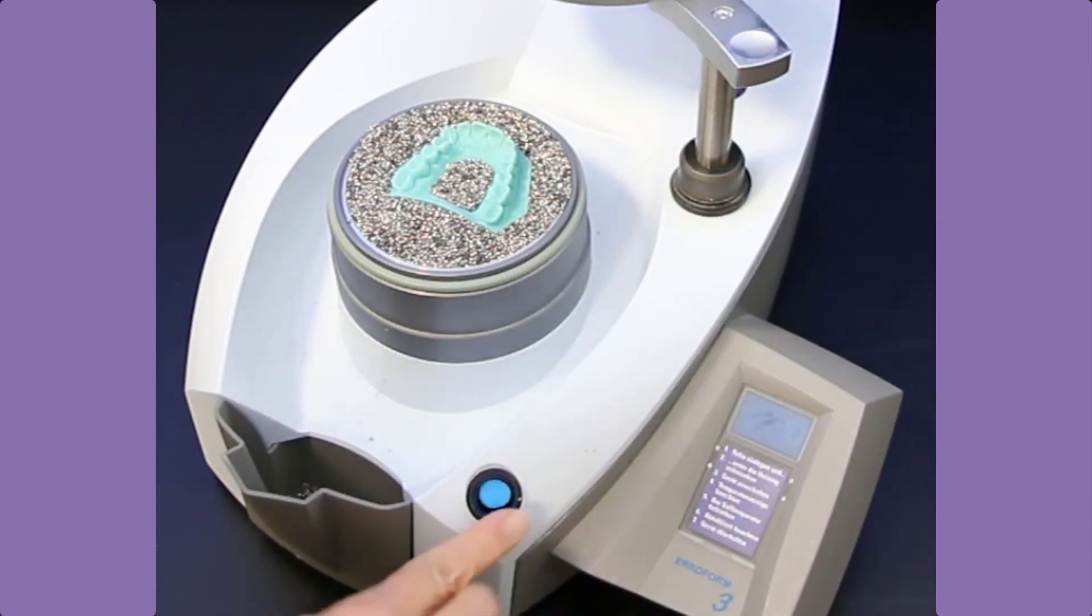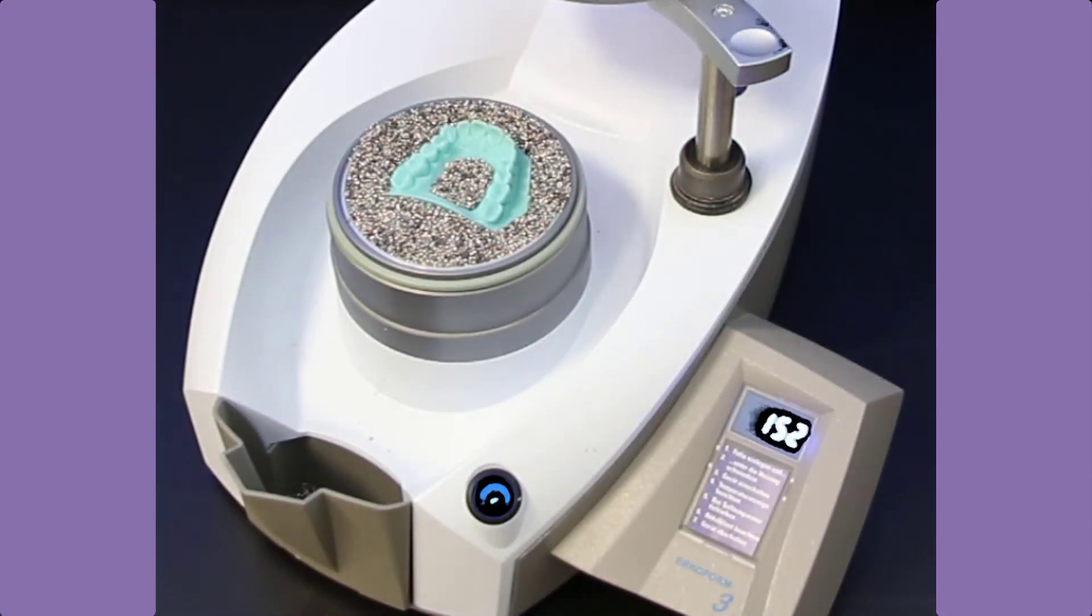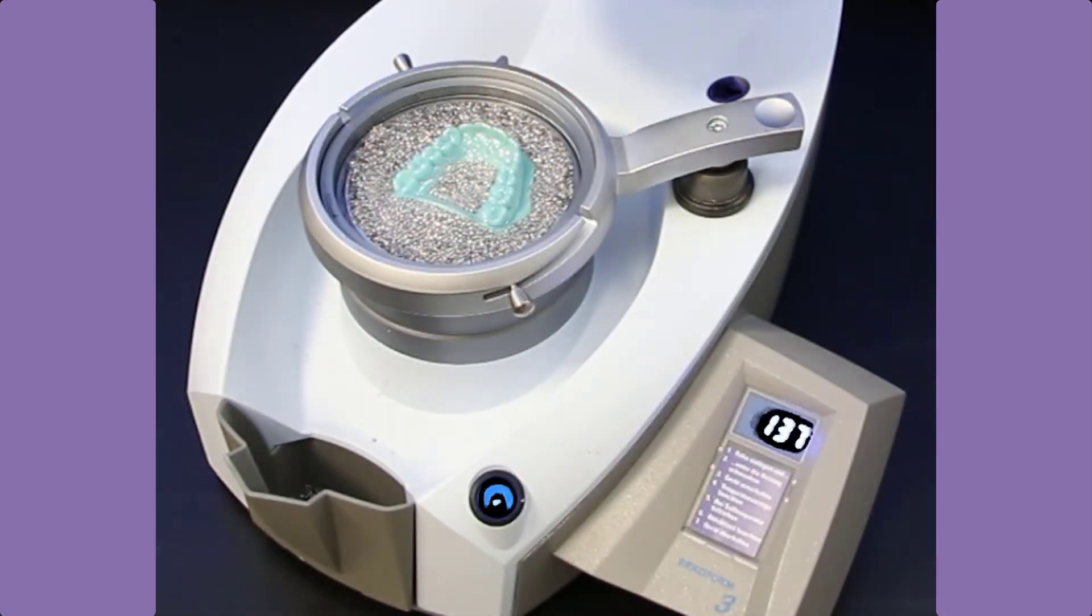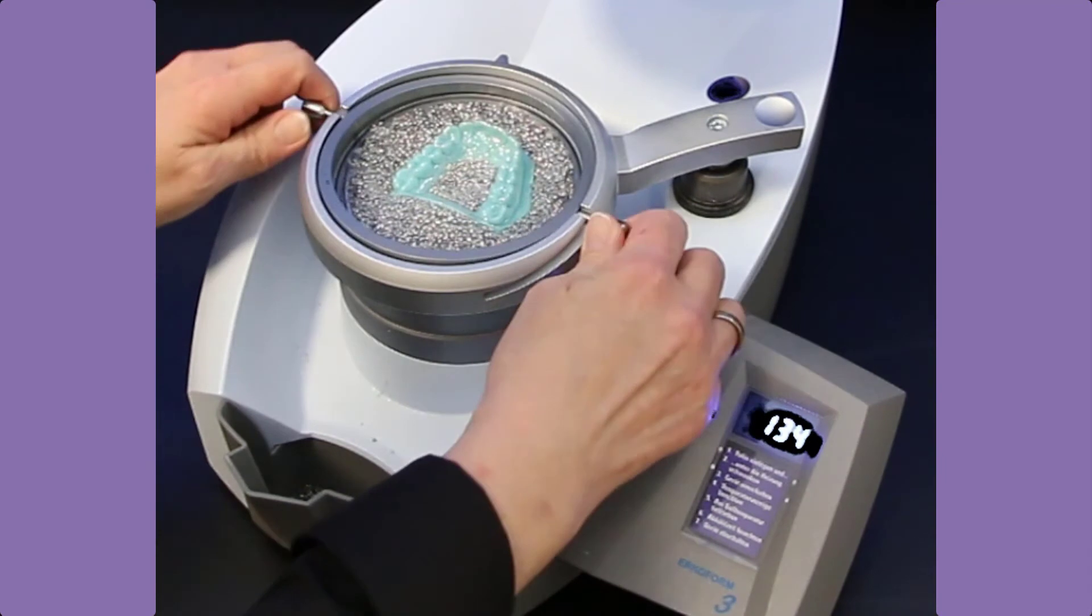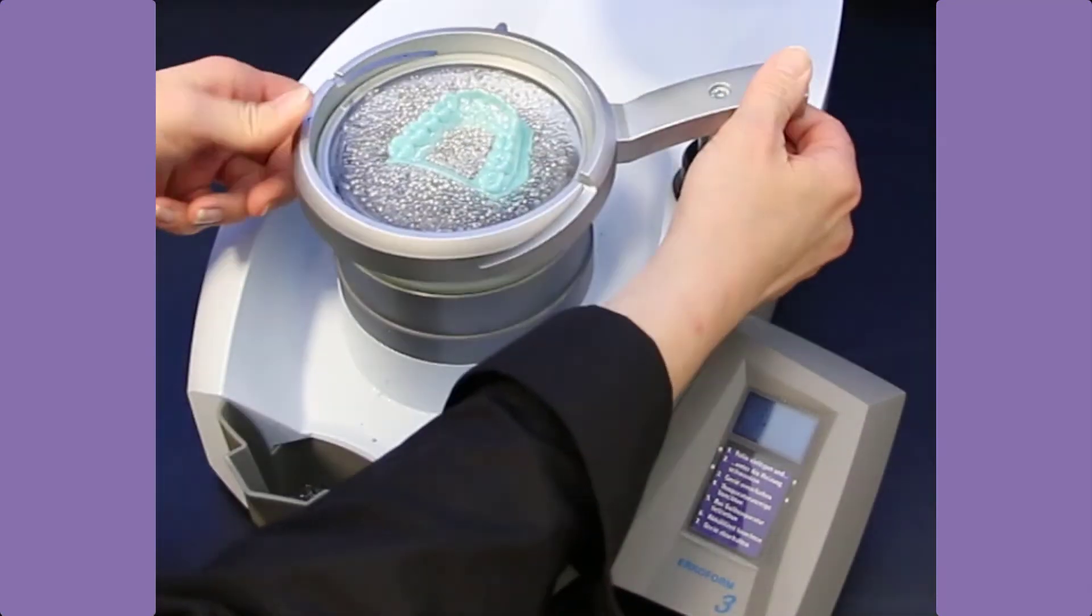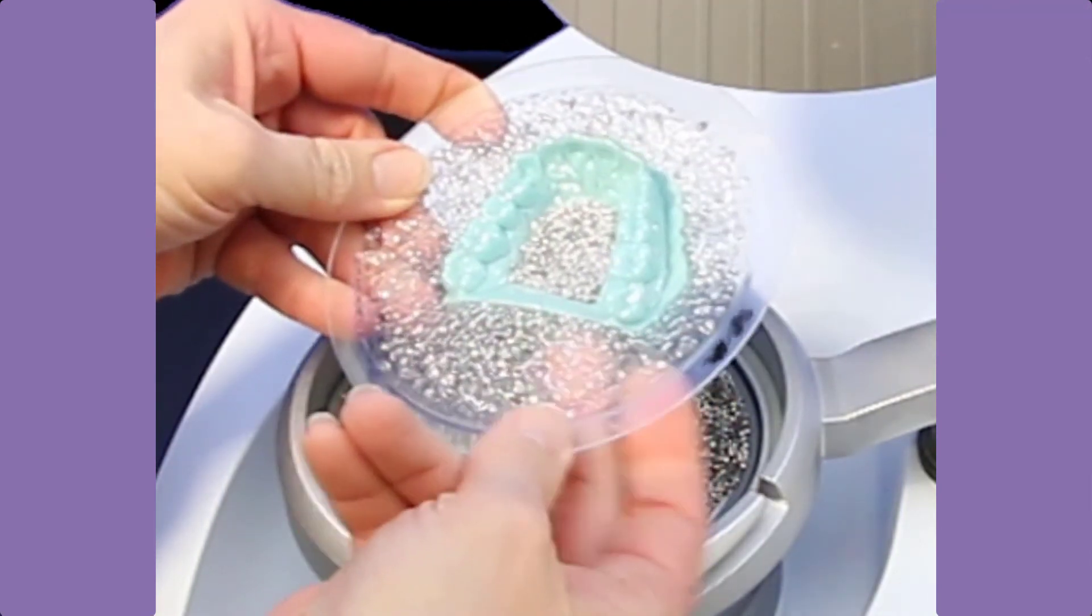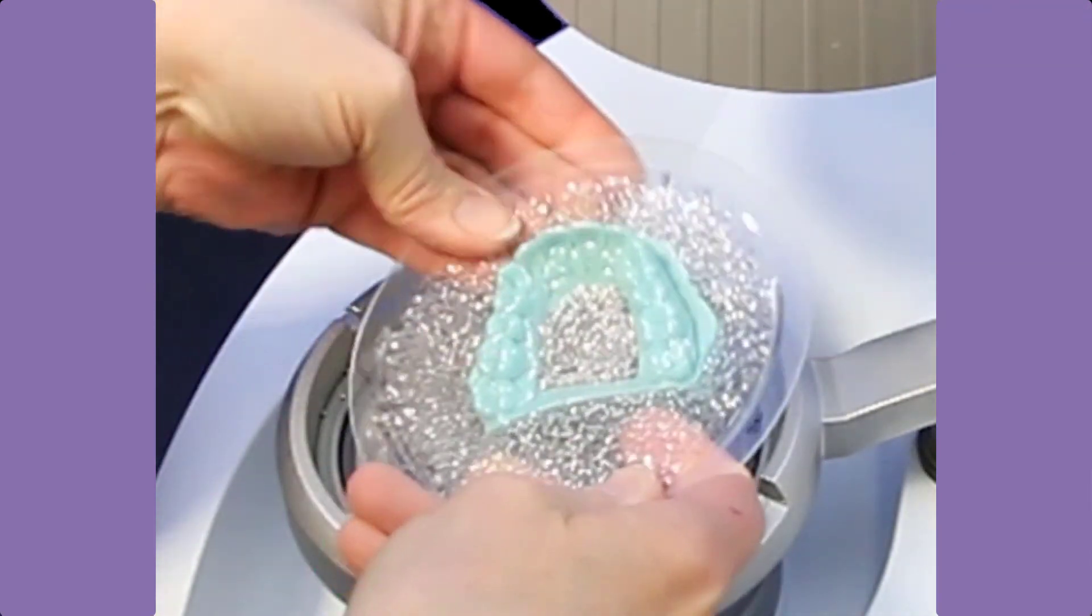Therefore, it is also suitable for the thermoforming technique and for aligner production. DEMA print stone teal can also be printed without hollowing at a maximum height of 15 millimeters. This means that no additional CAD software is required for the model production, and a quick and easy production of several models for, for example, the aligner technology is possible.